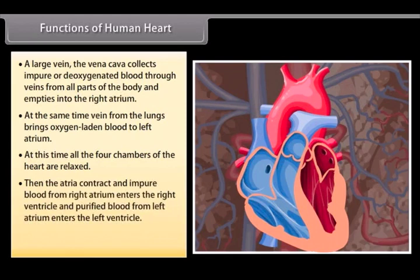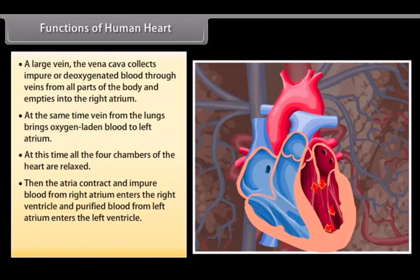Then the atria contract and impure blood from right atrium enters the right ventricle and purified blood from left atrium enters the left ventricle.